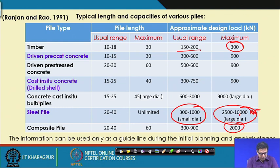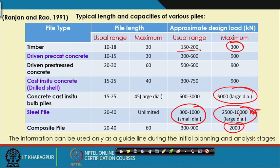Composite piles can take up to 2,000 kilo Newton. Concrete cast-in-bulk piles — where the base is enlarged — can take up to 9,000 kilo Newton for large diameter. Cast-in-situ concrete piles can take up to 900 kilo Newton.